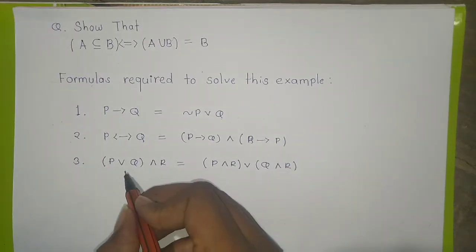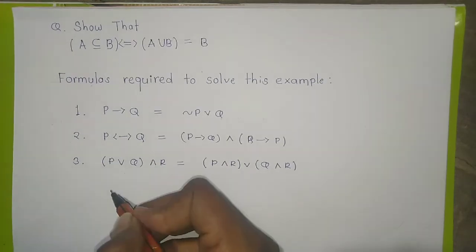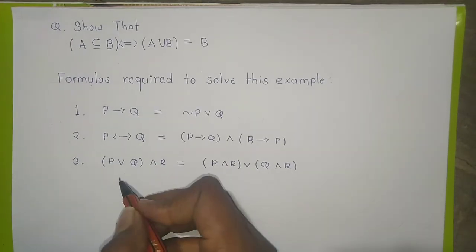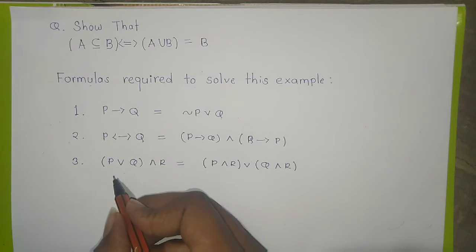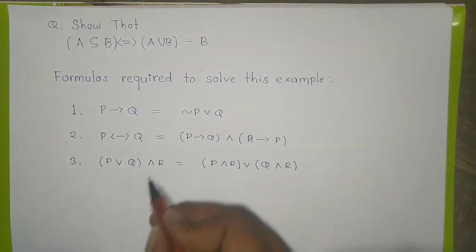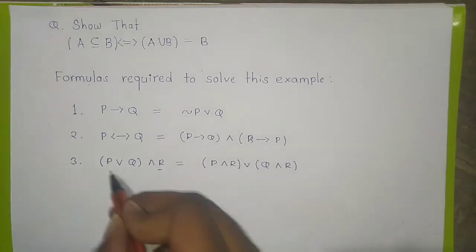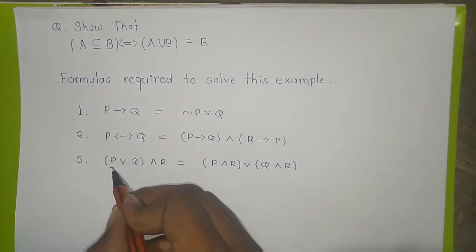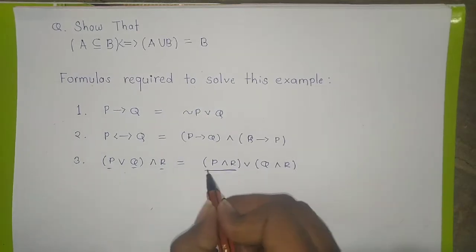The last one is the distributive law. In the bracket P or Q ended with R, we simply distribute R to both P and Q.